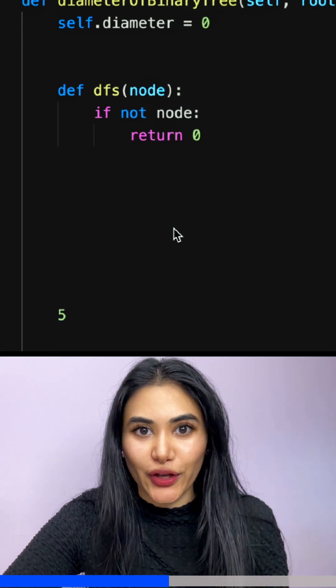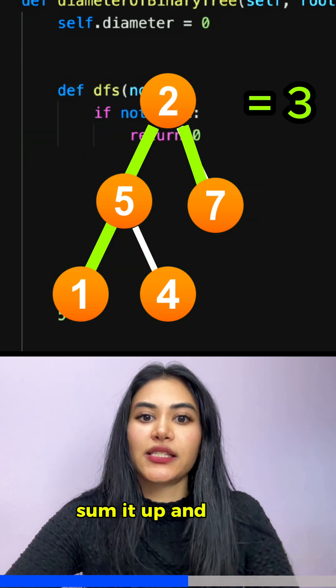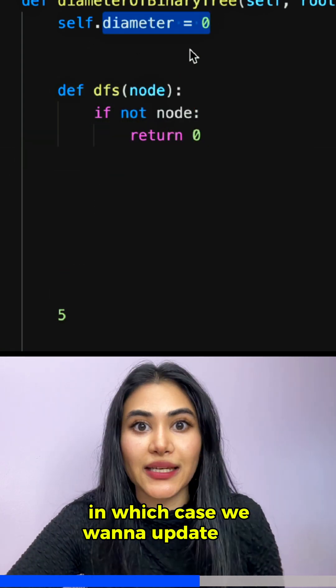Now what if the nodes are there? We want to figure out what our left path is, right path is, sum it up and see if it's greater than our current diameter, in which case we want to update the diameter's length.